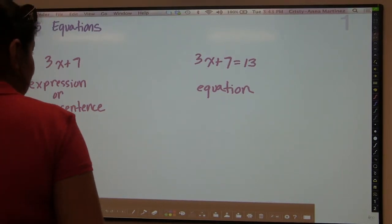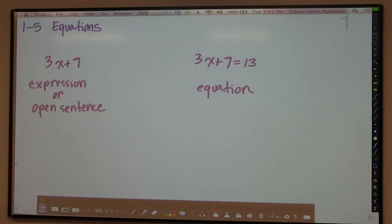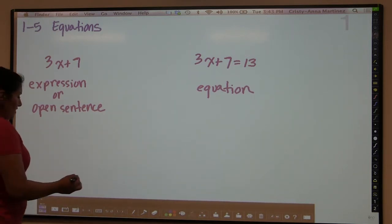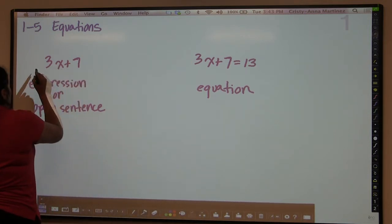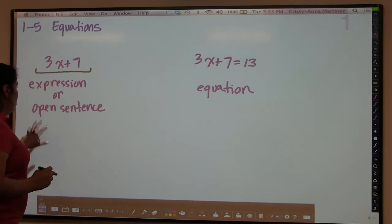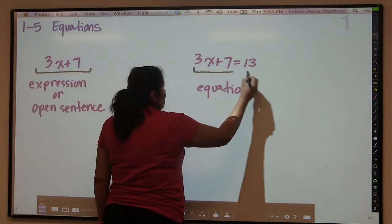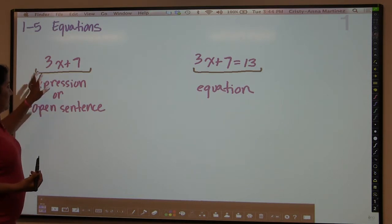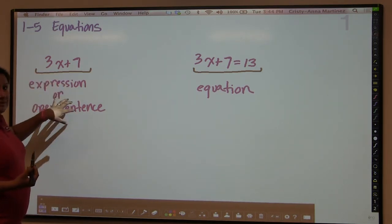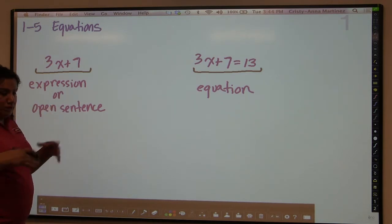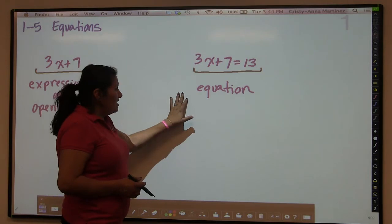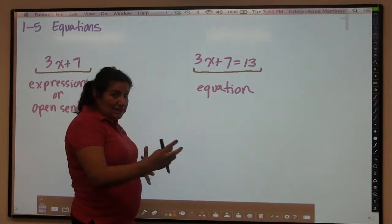Hello, today's lesson is 1.5 equations. What you see on the board right now is a couple of expressions and an equation. I wanted to show you the difference between what we call an expression — or what this textbook refers to as an open sentence — versus an actual equation. An open sentence doesn't have an equal sign in it, which is why they call it open; we don't know what it equals. But once you add the equal sign, then you have an equation.